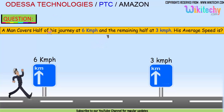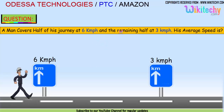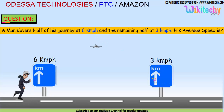A man covers half of his journey at 6 km per hour and the remaining half at 3 km per hour. What is his average speed?